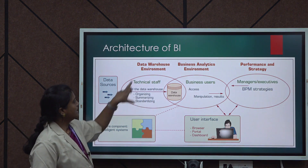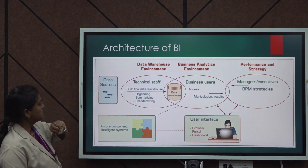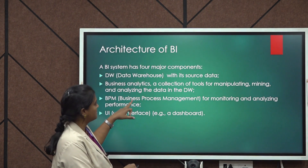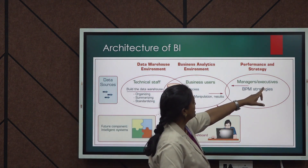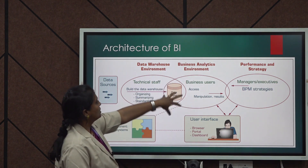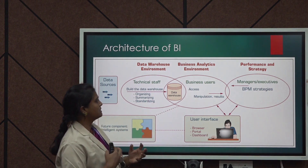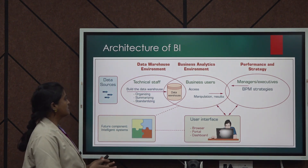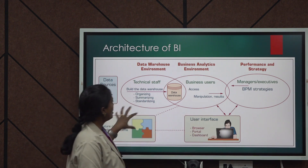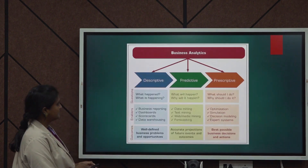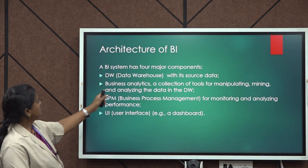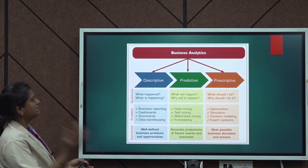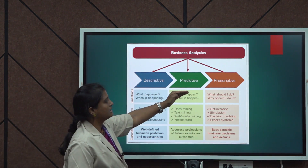In the BI architecture, we need a data warehouse or database to store data, business analytics tools to manipulate and analyze data, and managers and executives who use strategies and algorithms to get results and decide on the next steps. Business analytics — the main component of business intelligence — is done in three ways: descriptive analytics, predictive analytics, and prescriptive analytics.